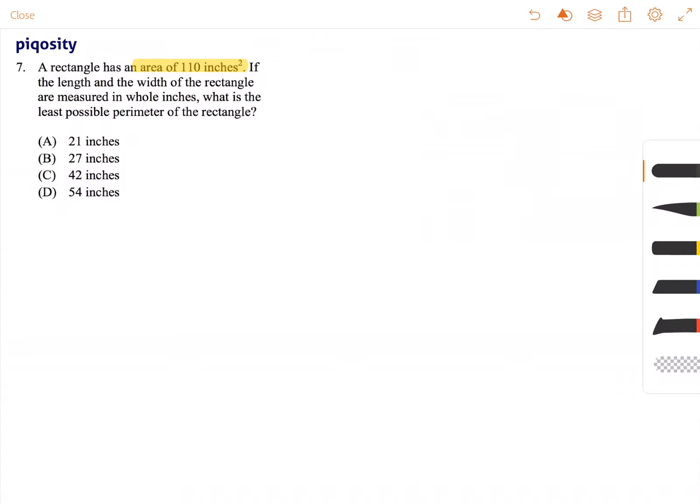So let's just go ahead and draw out a rectangle whose area is 110 inches, or just 110. If the length and width of the rectangle are measured in whole inches, what is the least possible perimeter of the rectangle?